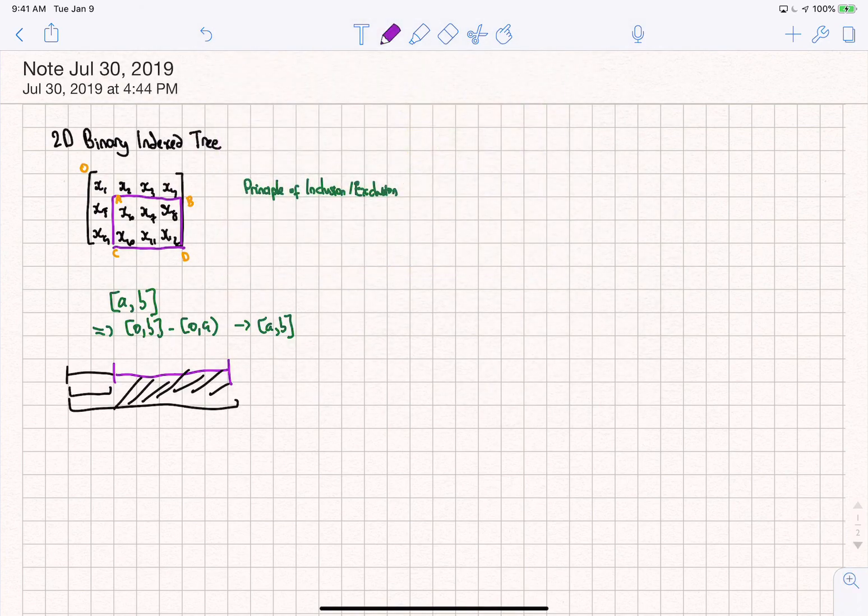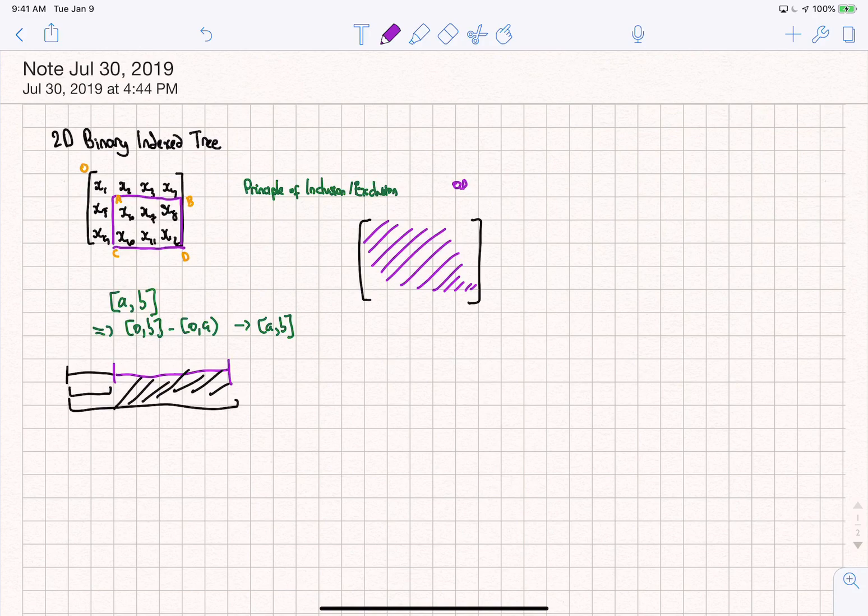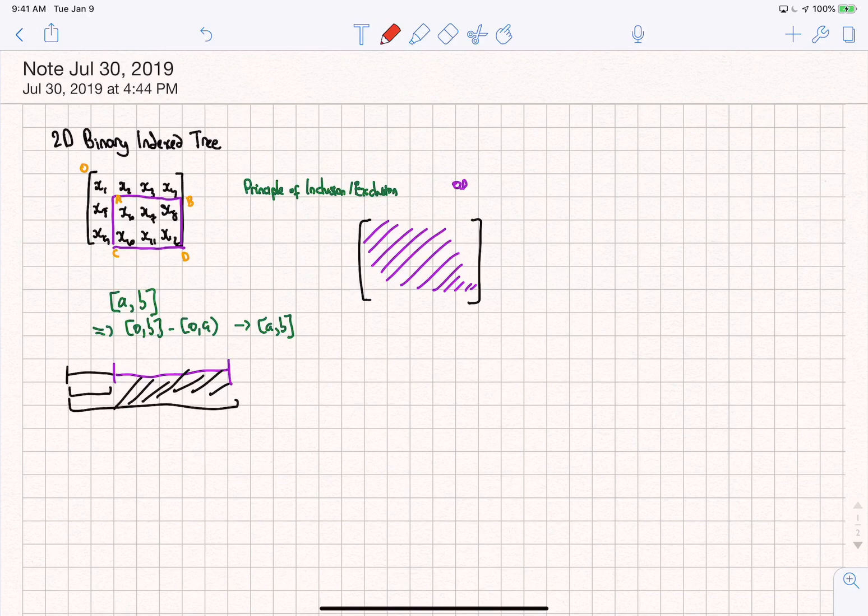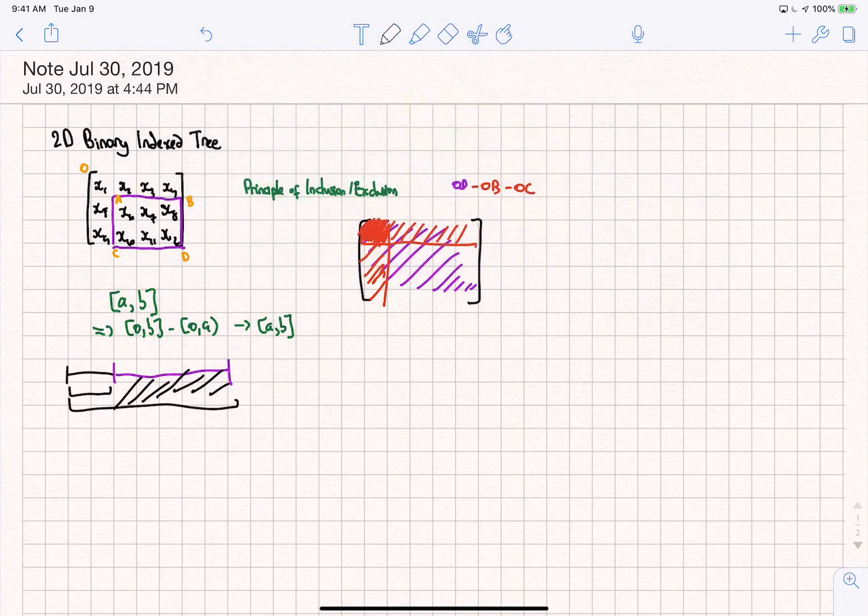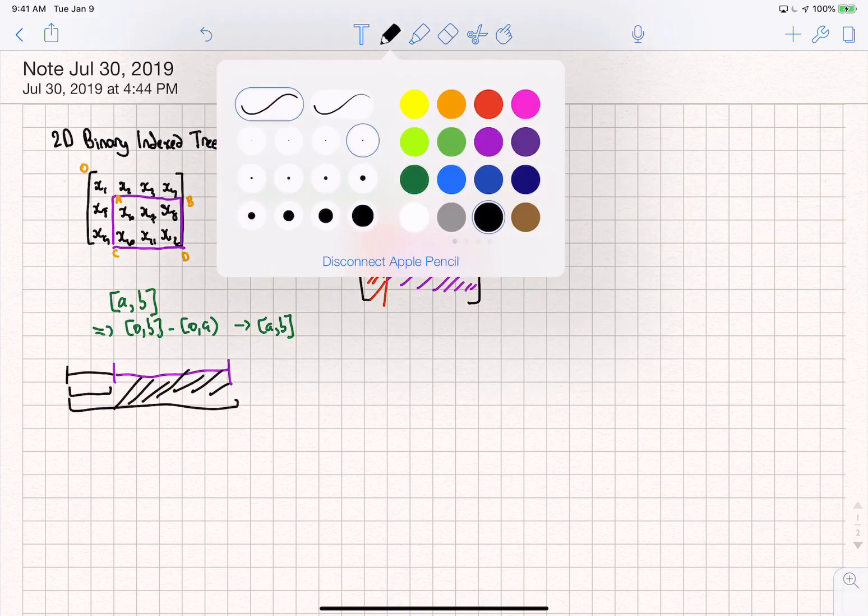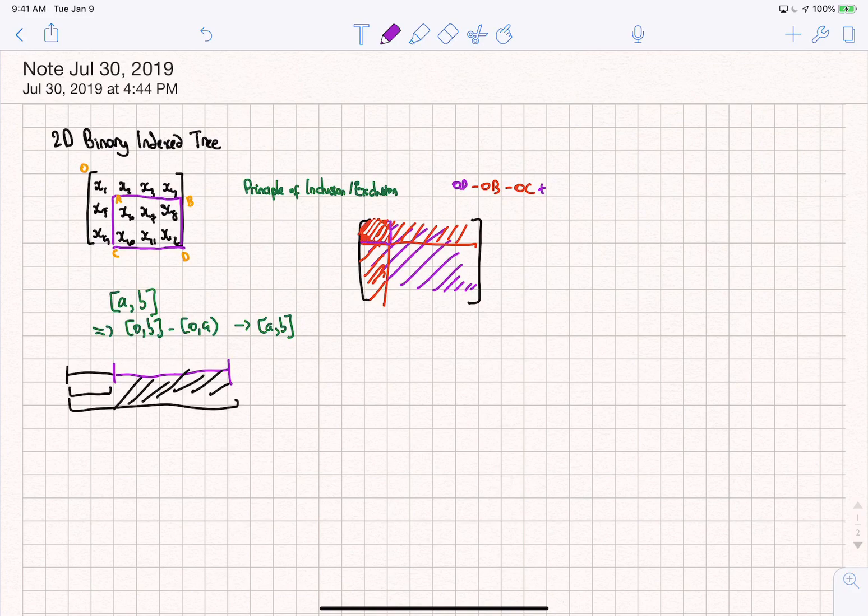So the idea of this algorithm is if we have a matrix like this, we first calculate O, D, which will give us this entire matrix. Afterwards, we calculate O, B. So O, B will give us this upper portion over here. Then we do O, C. So we do minus O, B. Then we do O, C as well. So we do this part over here. And this one gets double counted in this section over here. So then we need to add this section back. And in order to add this section back, we add back this part over here, which is O, A.